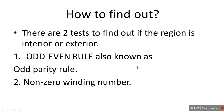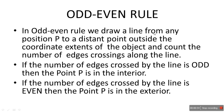In the odd-even rule, we draw an imaginary line from any point position P to a distant point outside the coordinate extents of the object, and count the number of edges crossing along the line. If the number of edges crossed is odd, then point P is in the interior. If the number of edges crossed is even, then point P is in the exterior. You can remember it as E-E — even means exterior.